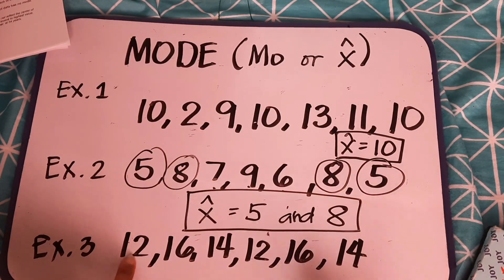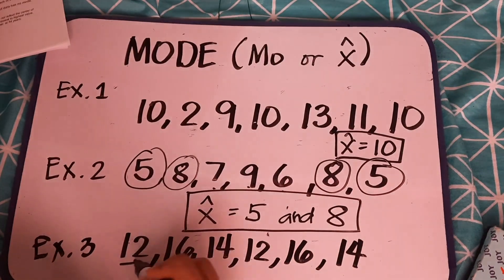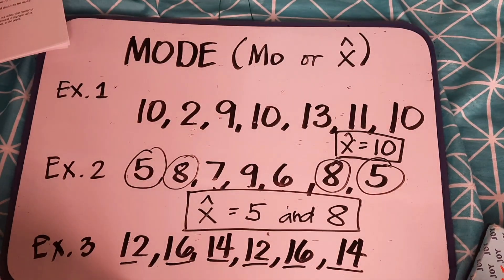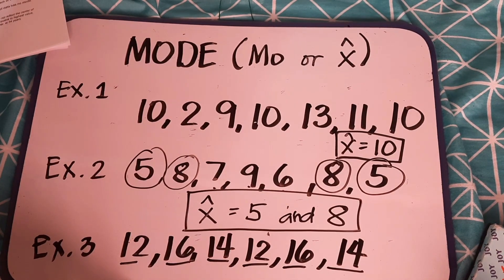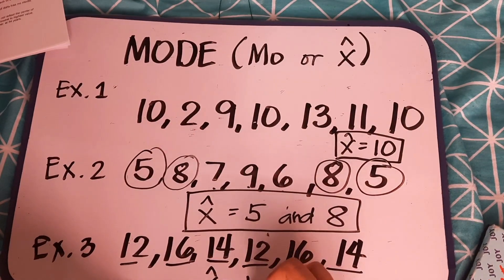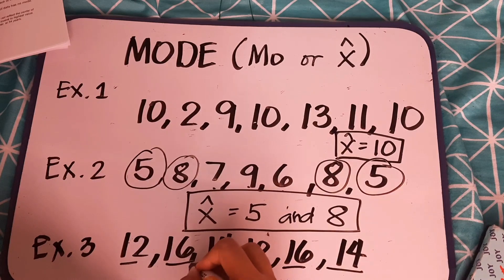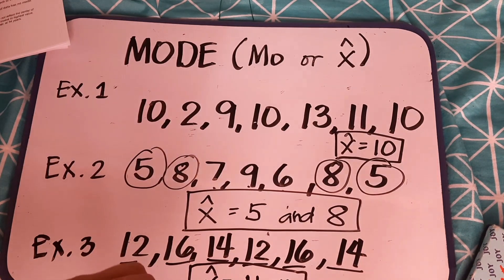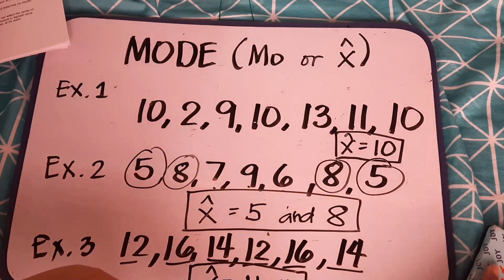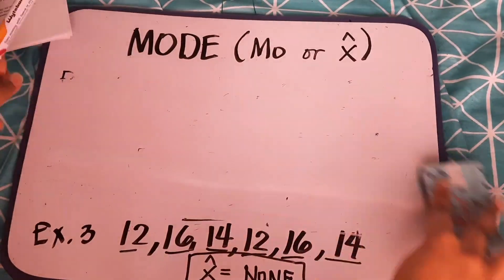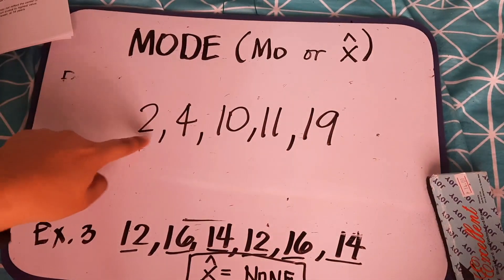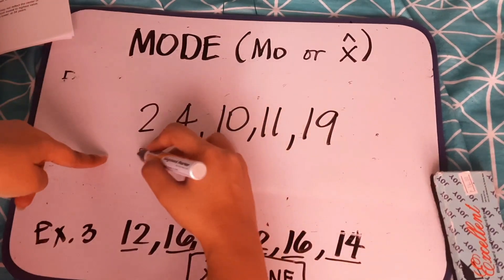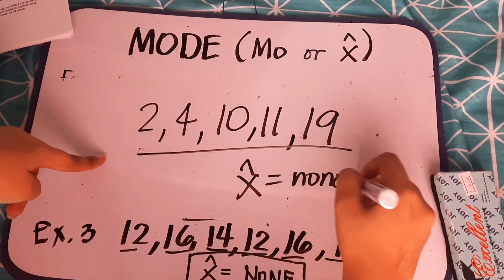And for example number 3: 12, 16, 14, 12, 16, 14. Dalawang beses nag-appear ang 12. Dalawang beses din ang 16. Dalawang beses din ang 14. What is the mode? Wala po tayong mode dito. Ibig sabihin, none. No mode at all. Why? Yan naman yung nahan doon sa rule number 3. If every measure appears the same number of times, then the set of data has no mode. Pare-pareha silang nag-appear, meron bang most often dyan? Wala. So, ibig sabihin, itong example na to ay wala ring mode. None.